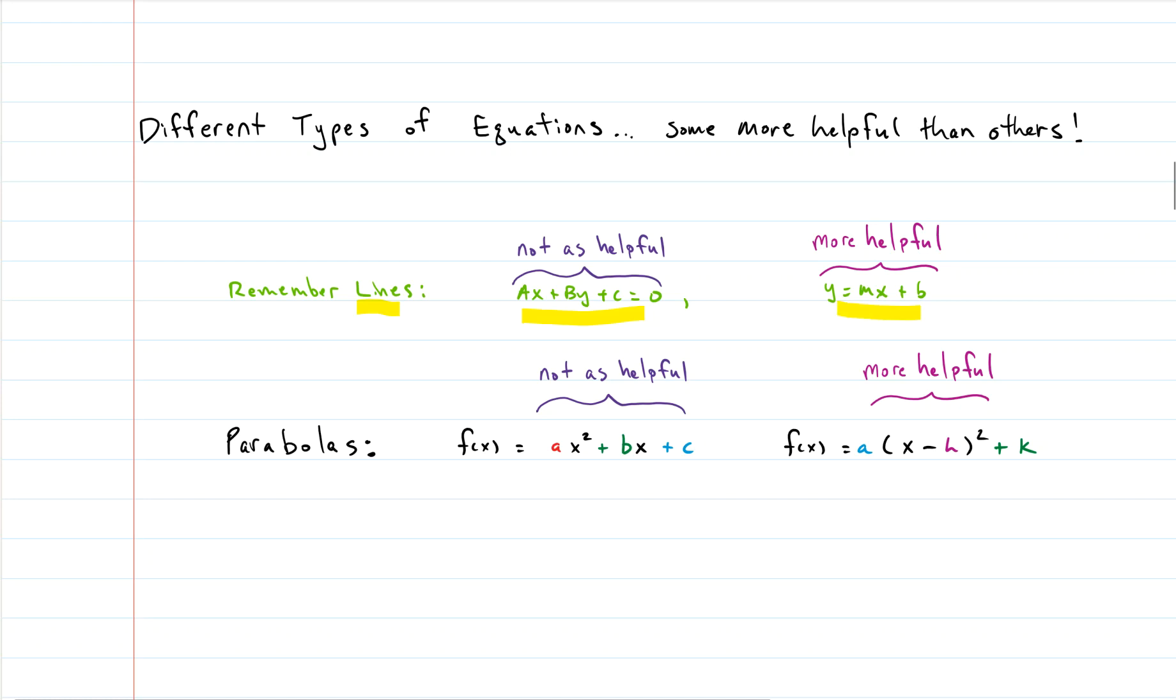A more helpful version of a line is this slope-intercept because you have your slope right here and then your intercept right there, B. So there are different versions of a line. Some are definitely more helpful than others.